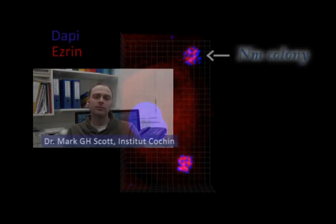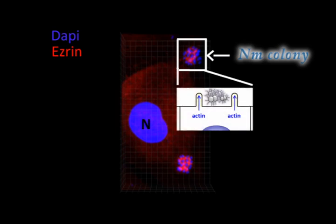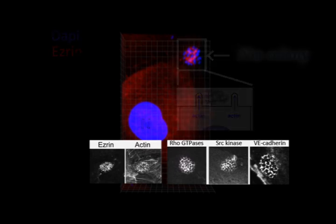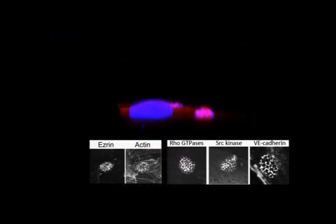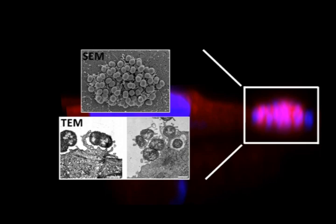In vitro, meningococcus adheres to brain endothelial cells and forms colonies, shown here in blue. These colonies trigger the formation of finger-like membrane protrusions that are rich in actin, ezrin, and signalling proteins including Rho-GTPases and SRC, as well as junctional proteins such as VE-cadherin. The membrane protrusions surround the colony, as shown in these electron microscopy images.